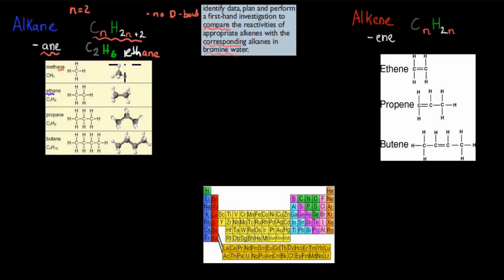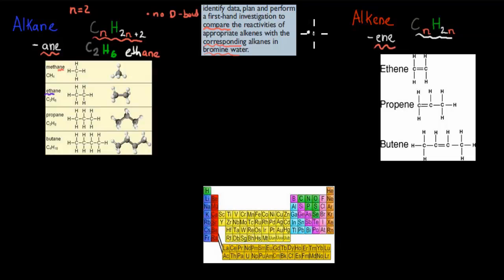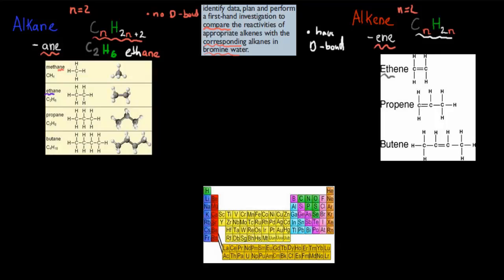Alkenes are very similar, except they have an -ene ending, such as ethene, propene, and butene. Their chemical formula is slightly different because they do have a double bond, which means they have fewer hydrogens. For example, for ethene, N equals two, so C is two, and H equals 2N, which is four. So the formula for ethene is C₂H₄. The systematic name is ethene, but the common name we usually use is ethylene — they're the same thing.